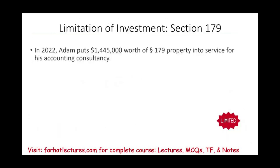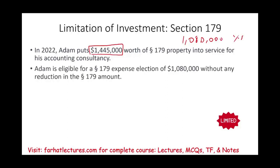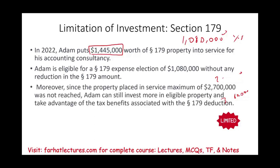Let's look at the investment limitation. Assume Adam places $1,445,000 of Section 179 property in service for his accounting consultancy in 2022. Can he take the full $1,080,000? Yes — he can take the full amount because you don't lose any of the $1,080,000 until you place more than $2.7 million in service. Adam could actually invest up to $2.7 million before starting to lose any deduction.